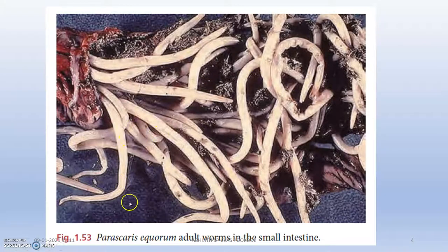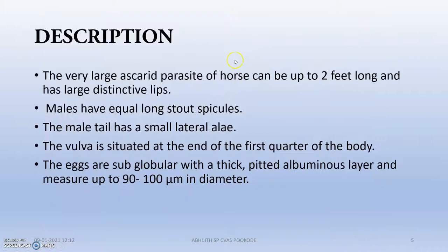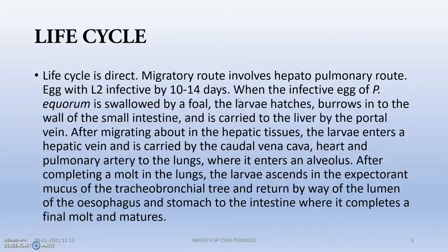These are the adult worms in the small intestine — you can see they are very large. Parascaris equorum are very large ascarid parasites of horses; they can be up to two feet long and have large, distinctive lips. The males have two long spicules. These are the key morphological features.